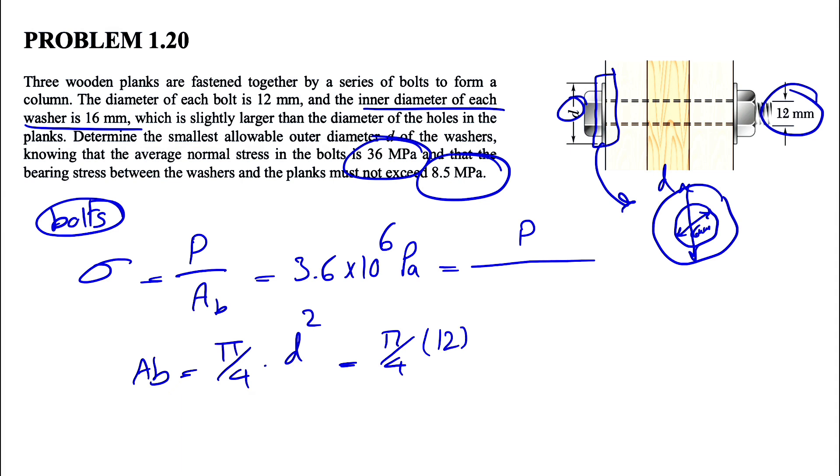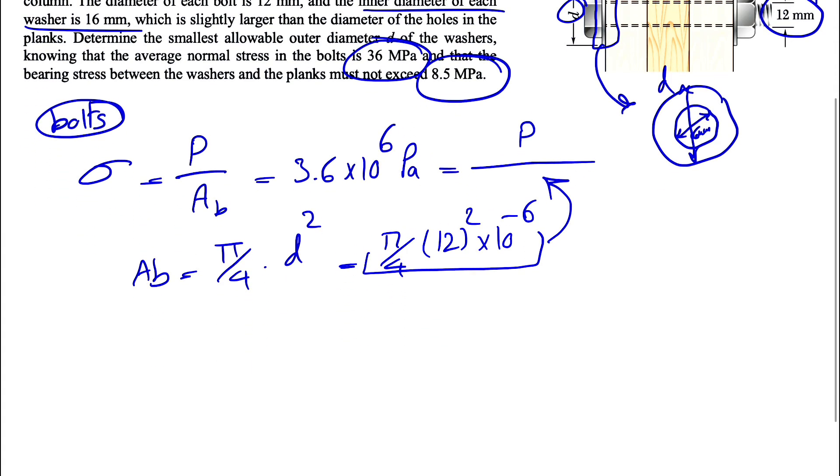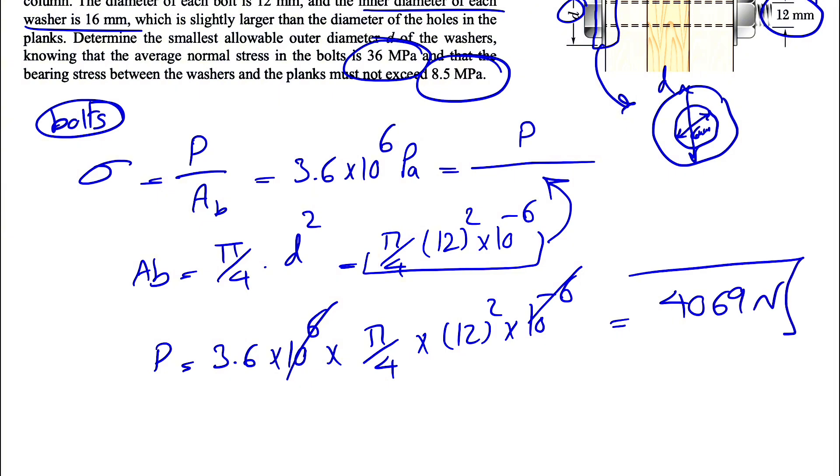We know that d is 12 millimeters, so 12 squared times 10 to the minus 6. All we need to do is put this in the denominator and our P would be simply 3.6 times 10 to the 6 times the area, which was pi over 4 times 12 squared times 10 to the minus 6. These two will cancel out and what we're going to get at the end will be 4069 newtons, which is the force that we have in the bolt.